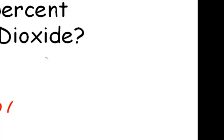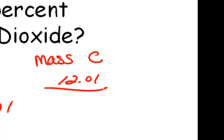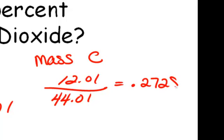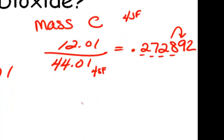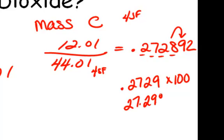In order to do this, we're going to take the mass of the carbon present. There's 12.01 AMUs of carbon divided by the mass of our compound, 44.01. So 12.01 divided by 44.01 gives us .2728925. We have four significant figures in 12.01 and four significant figures in 44.01. So we count our four significant figures — the 8, and the 9 tells the 8 to become a 9. So we have .2729. In order to take this decimal and make it a percent, we multiply by 100 and we get 27.29% carbon.